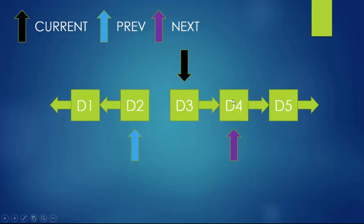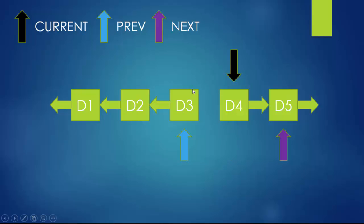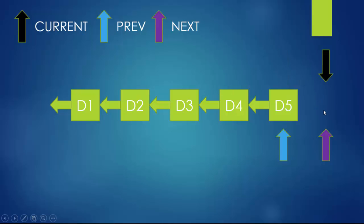The same thing happens again for d3 and every subsequent node: next gets the next value of current, current->next is flipped to point to prev, then prev is incremented to current and current is incremented to next. All these steps repeat over and over until current points to null. At that point, prev is pointing to the head of the reversed linked list, so you assign that value to the head.